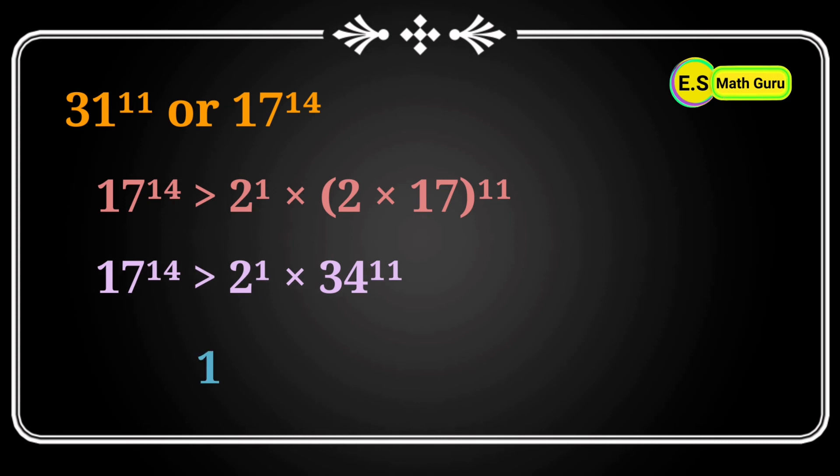From this we can conclude that 17^14 is greater than 31^11 because 2^1 × 34^11 is greater than 31^11. Thank you.